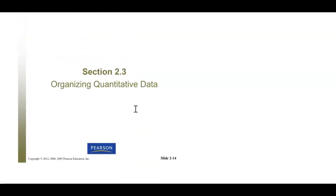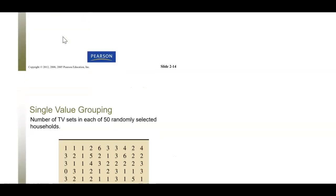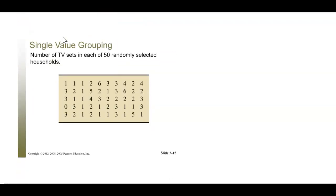Now let's move on to organizing quantitative data. When we organize quantitative data, we generally use three different types depending on the data: single value grouping, which looks a lot like our qualitative data; limit grouping; and cut point grouping. Limit grouping and cut point grouping depend on whether you have continuous or discrete data. Let's start with single value grouping.